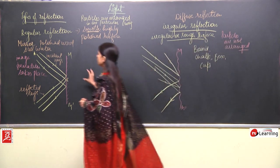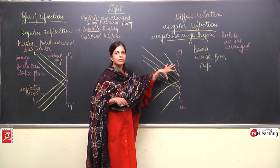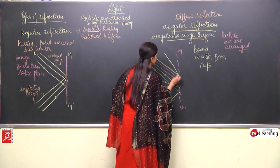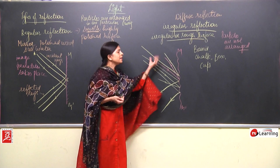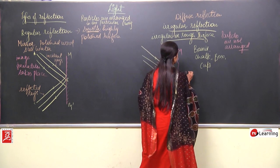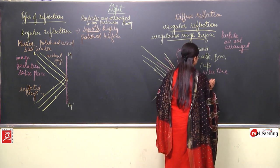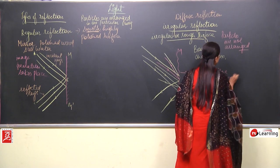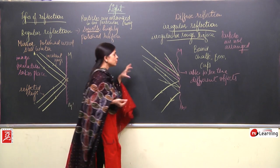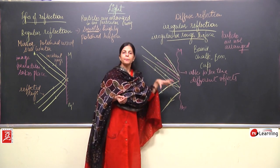In regular reflection, image formation takes place. But in irregular reflection, image formation does not take place because when the incident rays fall on the reflecting surface, they do not move in one particular direction — they all move haphazardly in uneven, different directions. This is actually the reason why we are able to see objects around us.